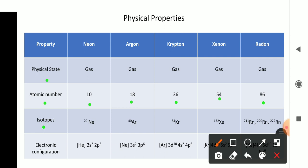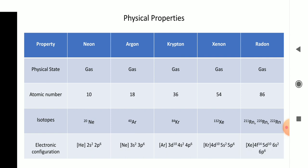Isotopes: neon has one isotope, neon-20. Argon has one isotope, argon-40. Krypton has one isotope, krypton-84. Xenon has one isotope, xenon-132. Radon has three isotopes: radon-211, radon-220, and radon-222. Finally, the electronic configuration: for neon, it is [He] 2s²2p⁶; for argon, [Ne] 3s²3p⁶; for krypton, [Ar] 3d¹⁰ 4s²4p⁶; for xenon, [Kr] 4d¹⁰ 5s²5p⁶; and for radon, [Xe] 4f¹⁴ 5d¹⁰ 6s²6p⁶.